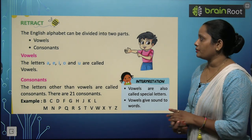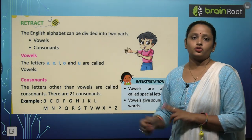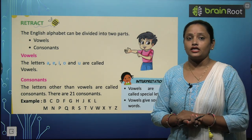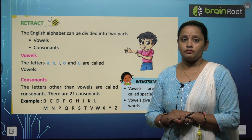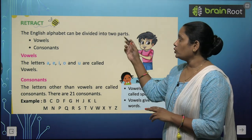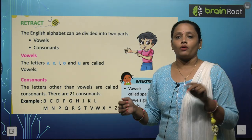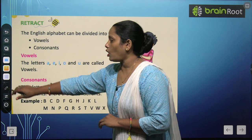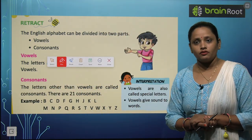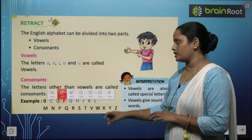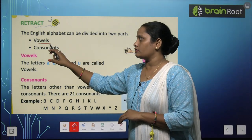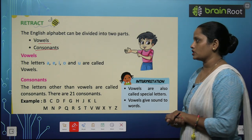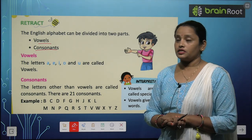The English alphabet can be divided into two parts. The first one is vowels and the second one is consonants. So these are the two parts: the first part is vowels and the second one is consonants. Now let's read quickly.